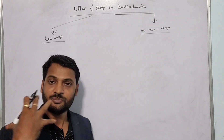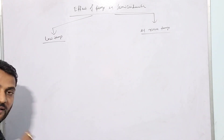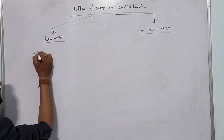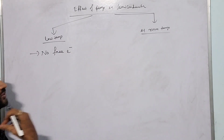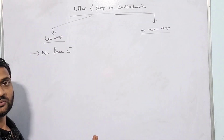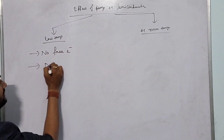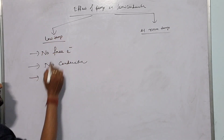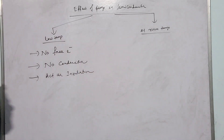At low temperature, the inner orbit electrons are bounded closely and the valence orbit electrons are engaged with covalent bonds. So there are no free electrons — no free electrons. The innermost orbital electrons are closely packed and the outermost valence electrons are engaged with covalent bonds, so there is no conduction. In this case, the semiconductor will act as an insulator, because an insulator does not conduct current.